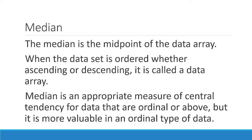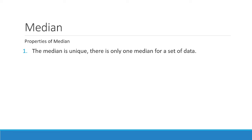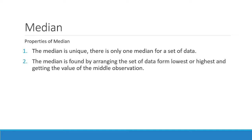Our examples will contain interval and ratio level of measurement. For some properties of median: first, median is unique for a given dataset — meaning there is only one median for a set of data. Also, the median is found by arranging the dataset from lowest to highest and getting the value of the middle observation.